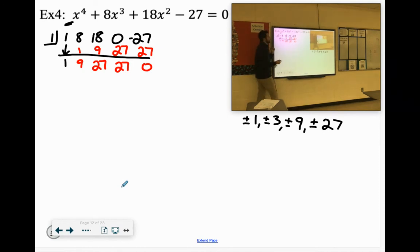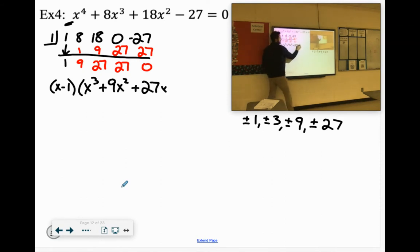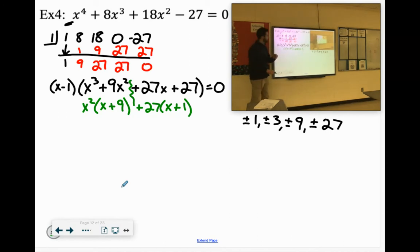So, 1 is a factor. So we'll say x minus 1, and then we'll write what's left. It started x to the 4th, so we have 1x to the 3rd, plus 9x squared, plus 27x, plus 27. So let's see if we can factor that by grouping. So these have an x squared in common, which leaves us with x plus 9. These have a 27 in common, which leaves us with x plus 1. It's not going to work. We can't factor by grouping. So we need to go back to the drawing board of synthetic division.